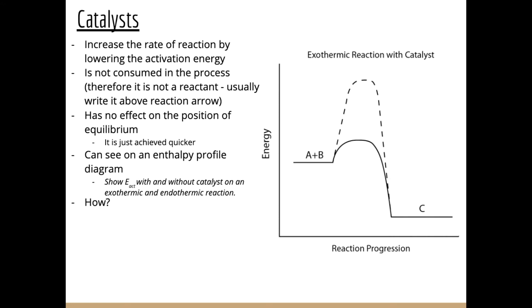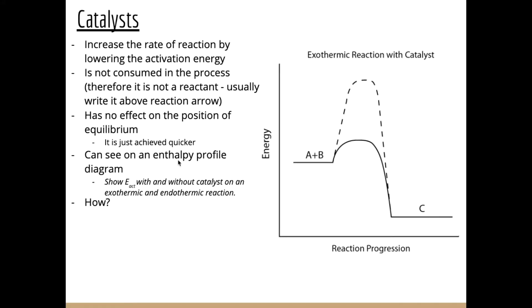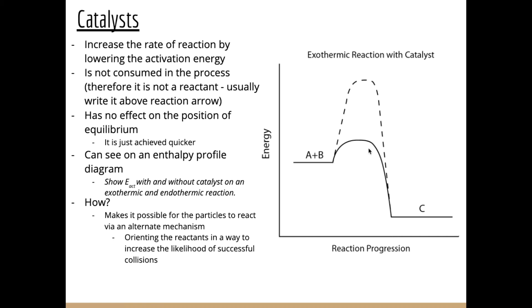So how does a catalyst work? We don't really need to know the specifics of how a catalyst operates at this point, but it's worth considering because it helps us understand them better. What they do is give an alternate mechanism for the particles to react. Instead of operating by one mechanism, they react by another. They can orient the reactants in a way to increase the likelihood of successful collisions.